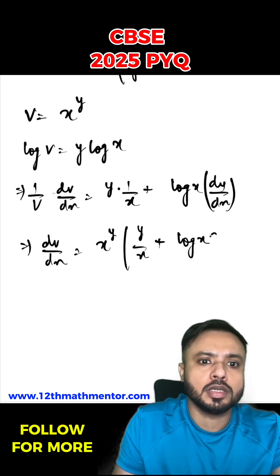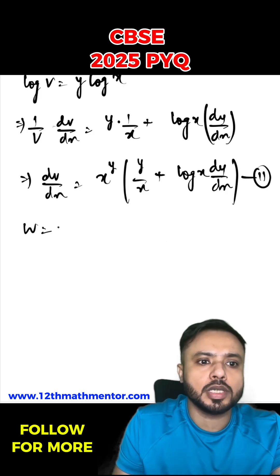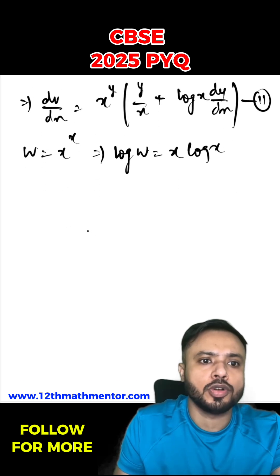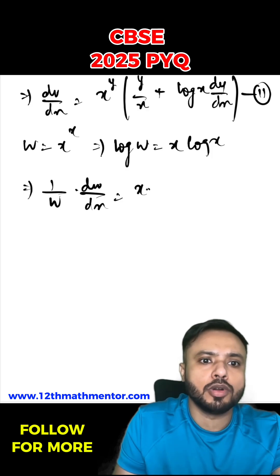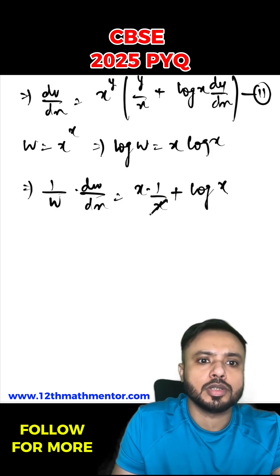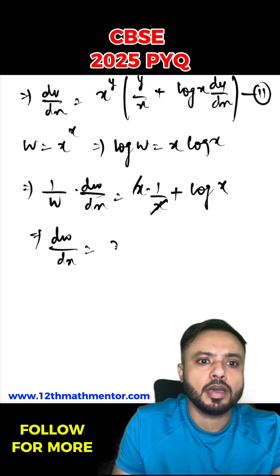And w is x raised to the power x, so log w equals x log x. Differentiating both sides with respect to x, 1 upon w times dw by dx equals x times 1 by x plus log x. The x and x cancel, so dw by dx equals x raised to the power x times (1 plus log x). This is equation number 4.